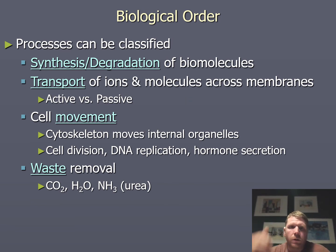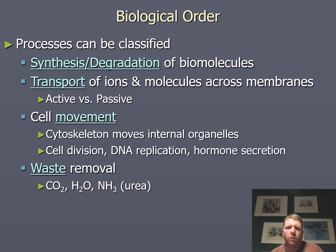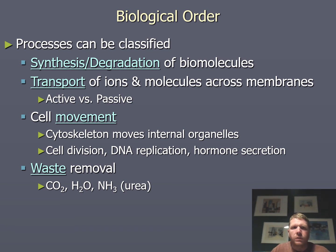Biological order: processes can be classified as synthesis and degradation of biomolecules, transport of ions and molecules across membranes — which can be active or passive — and cellular movement including cytoskeleton movement of internal organelles, cell division, DNA replication, hormone secretion, and waste removal. We'll be talking about all these things later when we discuss metabolic processes. Essentially, this has been a preview of everything you probably already know — now we'll be putting it into context within this class. There's a lot of material, but the good news is you already know quite a bit.